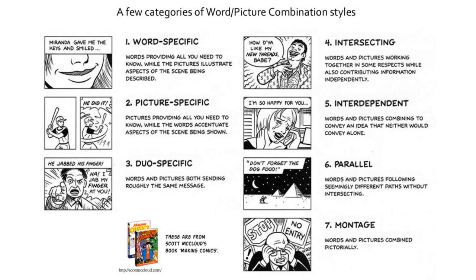Picture-specific: we have two moments, a moment of closure between a before and after. He's swinging and he's done it — he hit the ball — and the words say 'he did it.' So we know he didn't miss. The 'he did it' emphasizes the outcome; it tells us how to interpret these pictures. Duo-specific is a funny one — I like to point it out as something people usually do at the beginning of making comics. It's the least nuanced comics with words and pictures, because it's sort of didactic and self-repetitive.